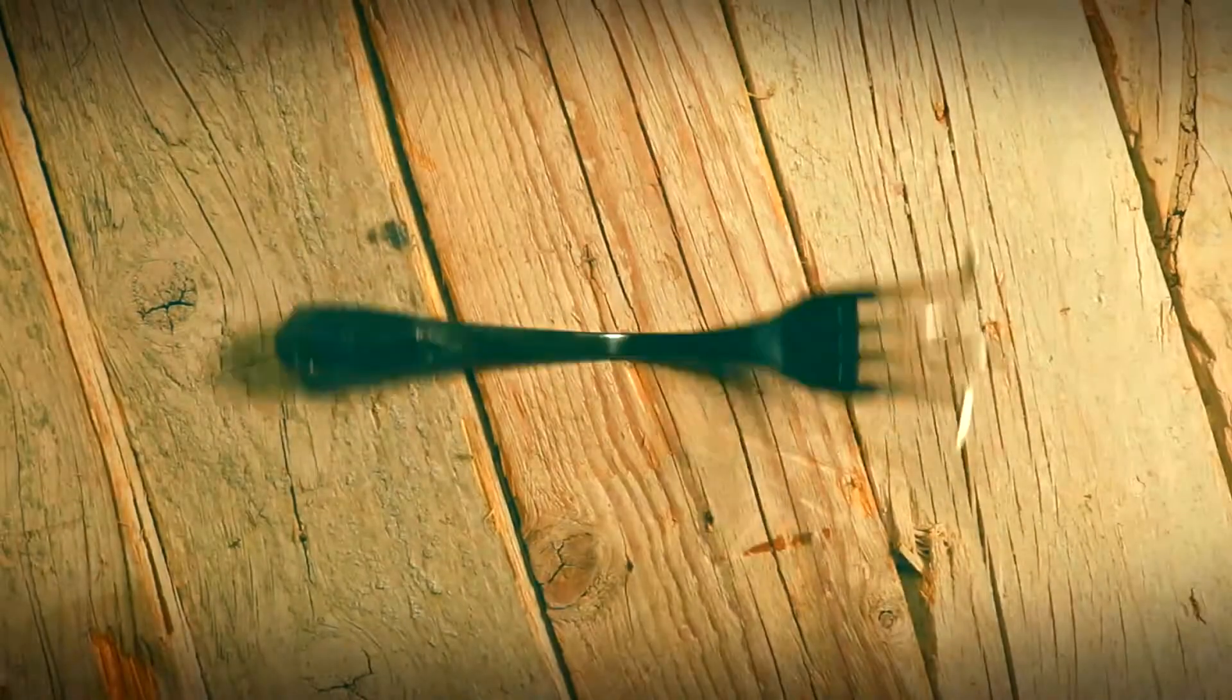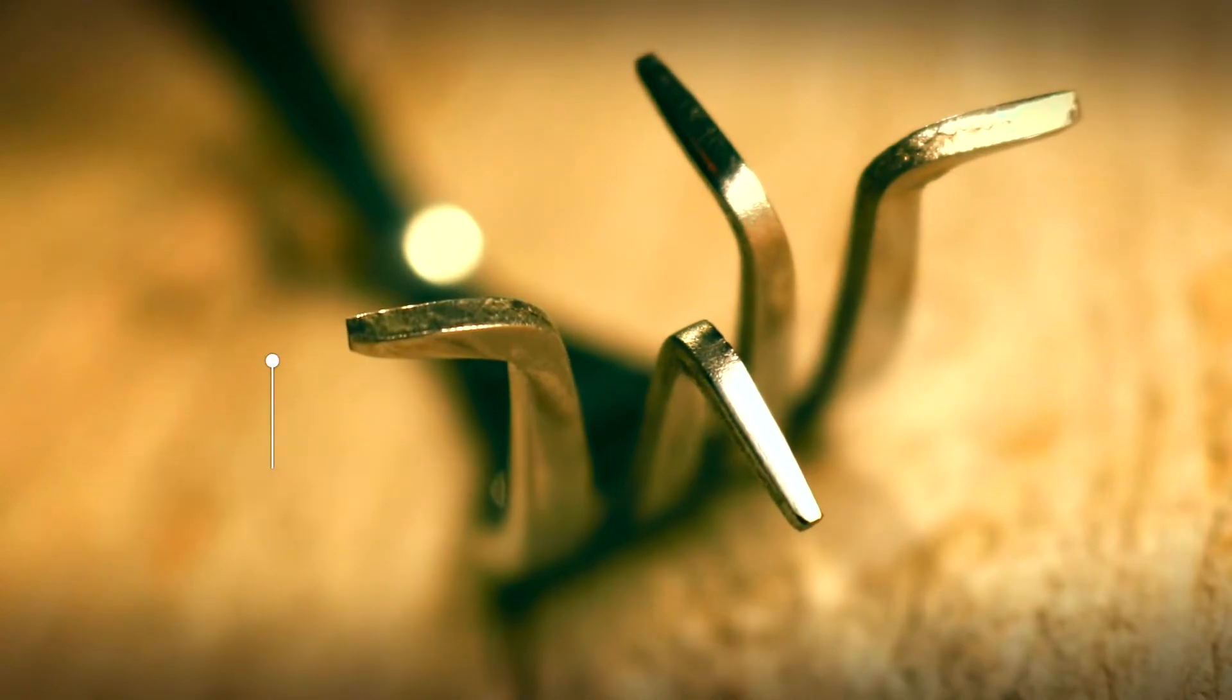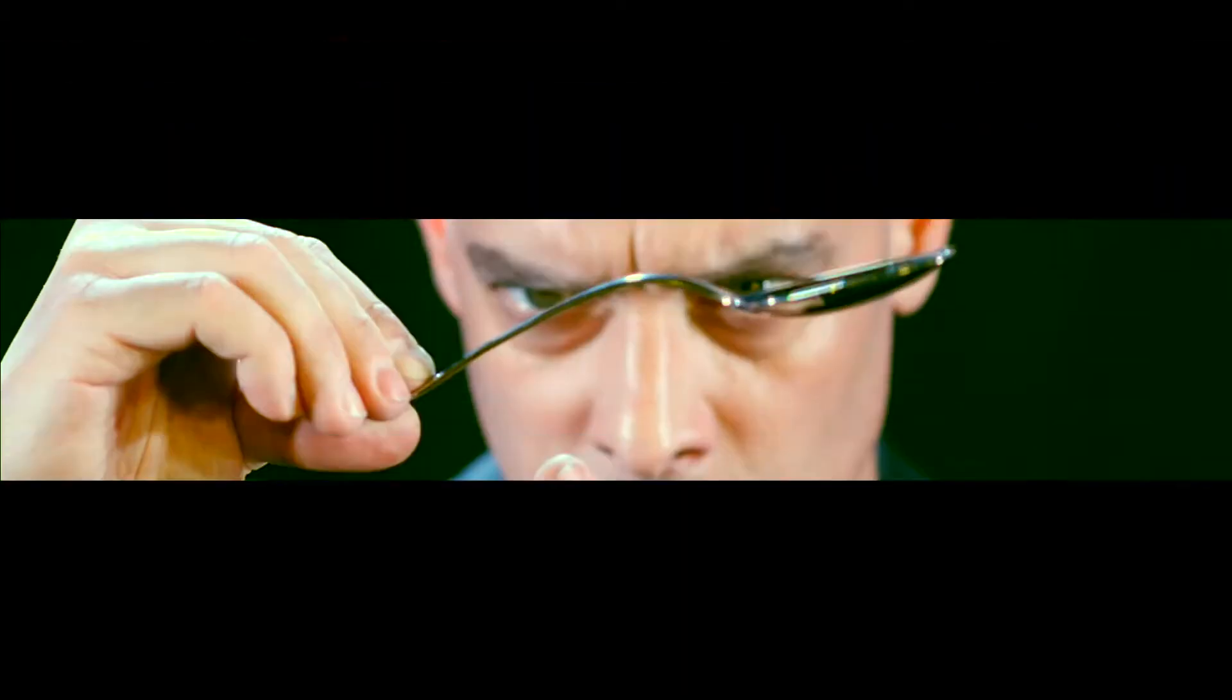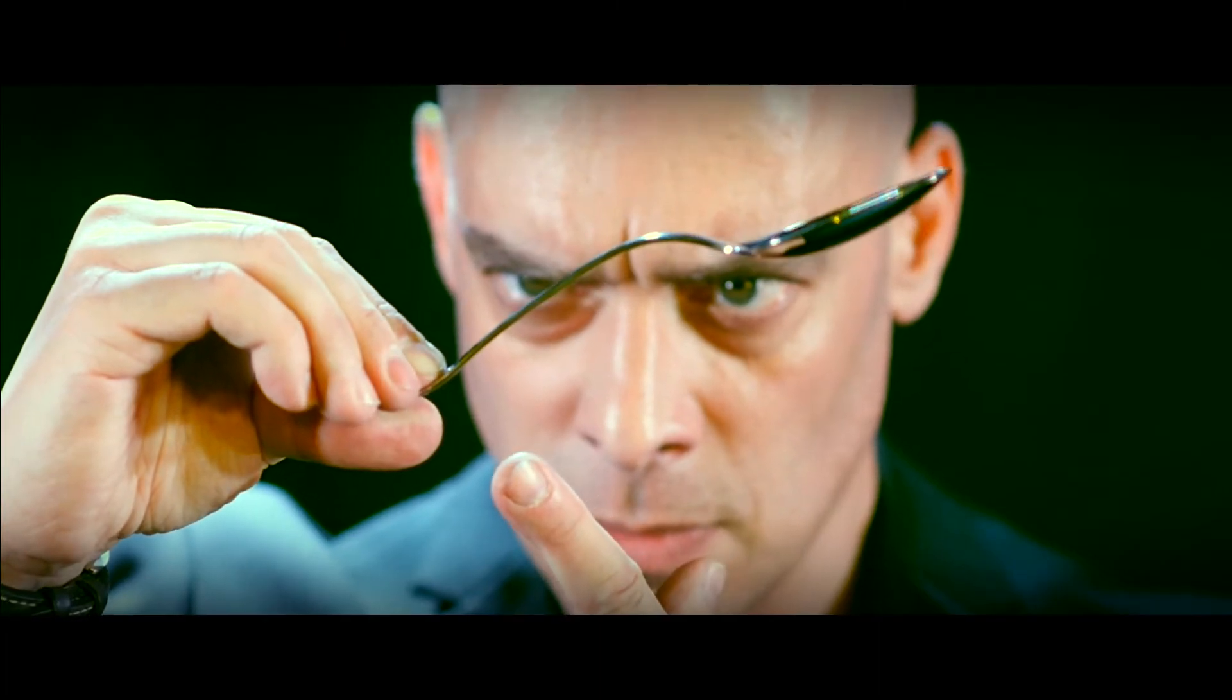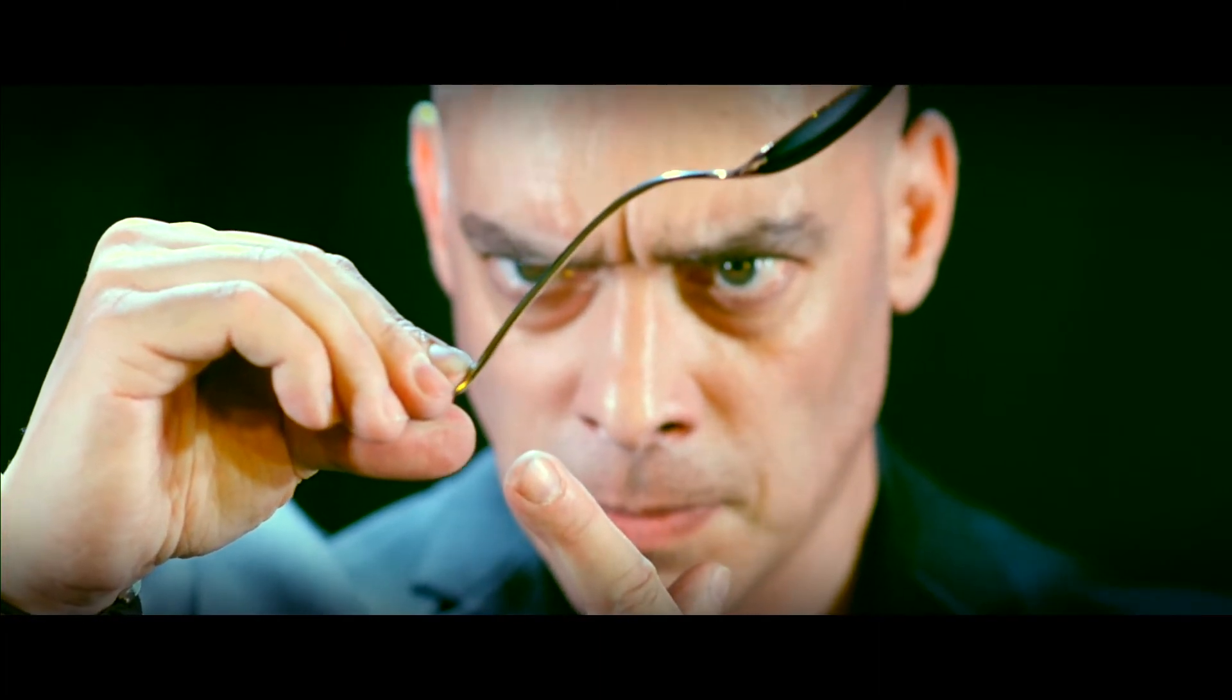You can also bend the tines to an impossible 90 degree angle upwards, downwards or sideways, or bend the very end of the handle of both a spoon and a fork.